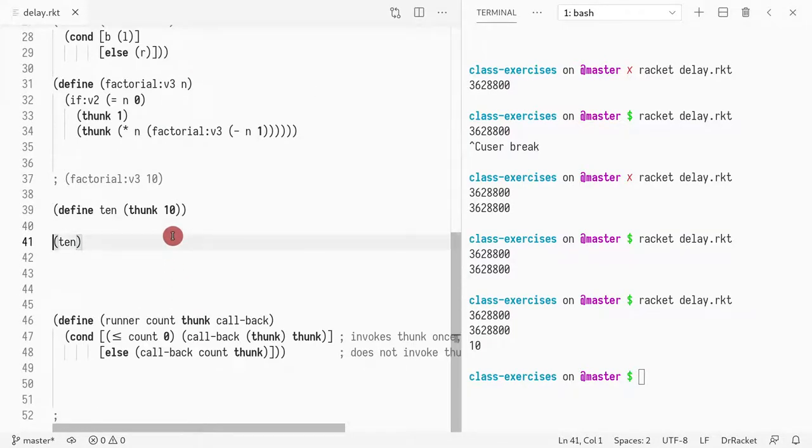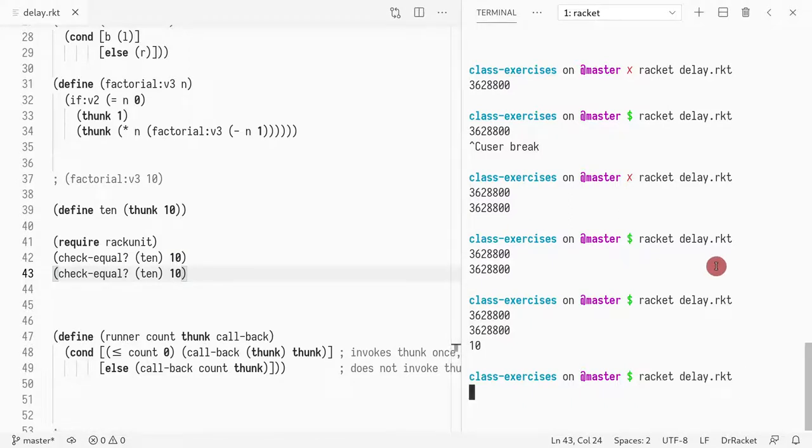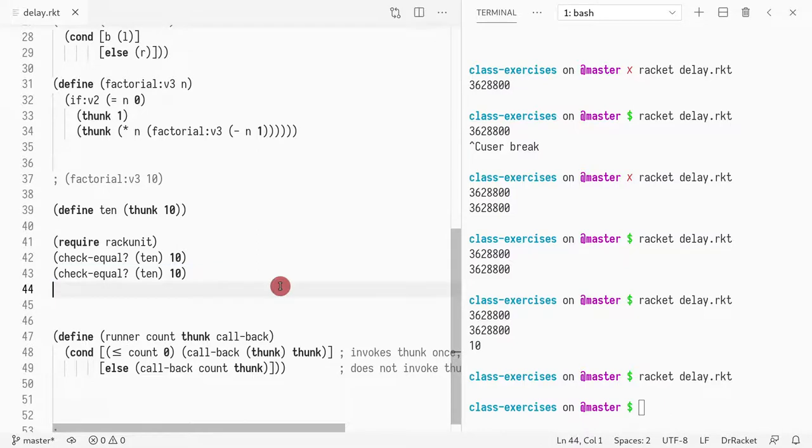So if I do require unit, then I do check-equal. If I call 10 and, of course, it might not surprise you, if I call this function again, I should also get 10. So I get the same value twice.